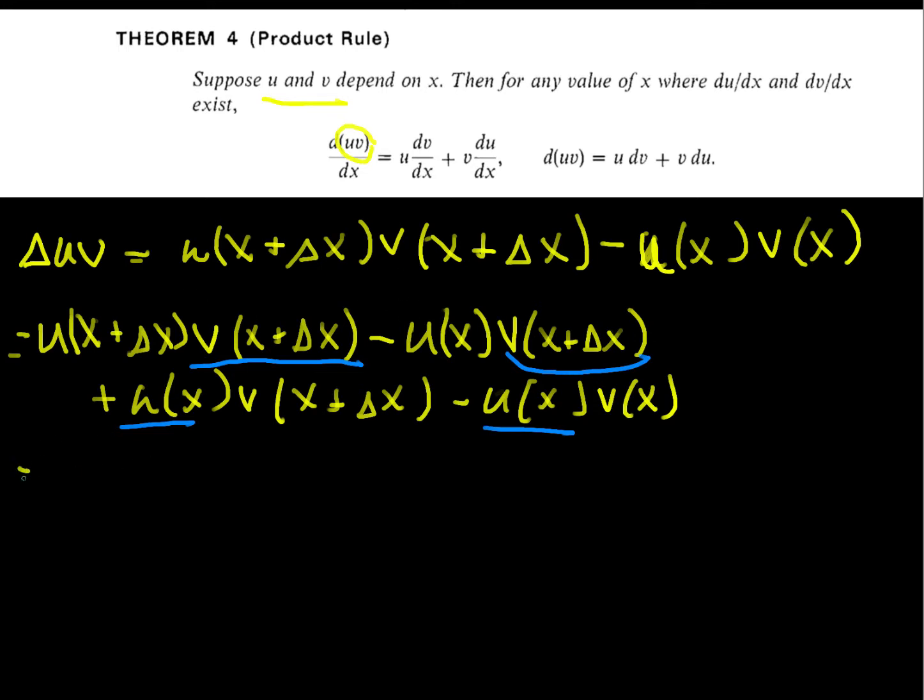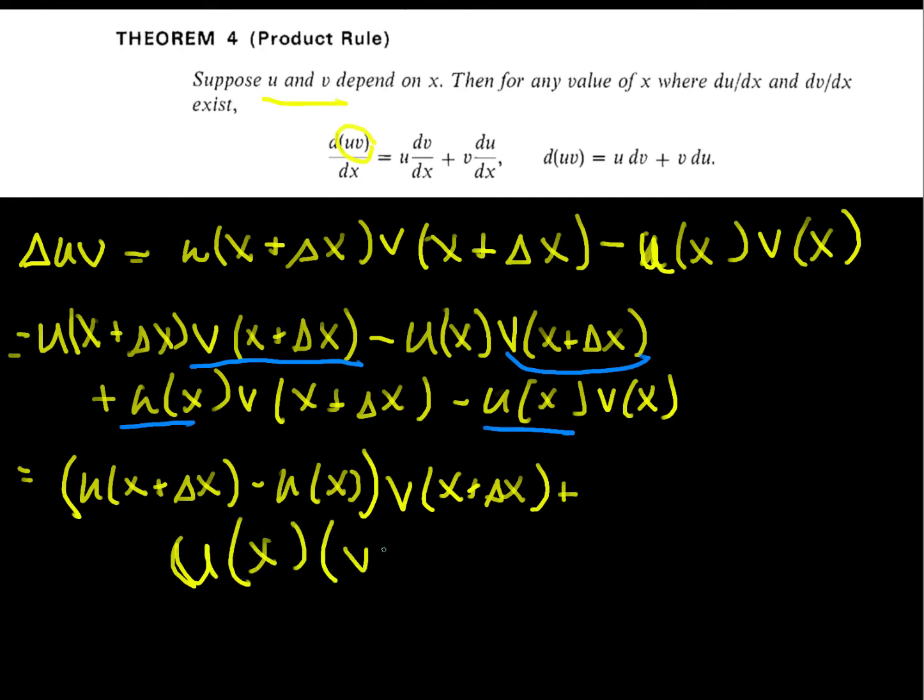And this looks like u of x plus delta x minus u of x, the whole quantity times v of x plus delta x. And then it's plus, and now I'm going to factor the u of x out. So plus u of x times v of x plus delta x minus v of x.